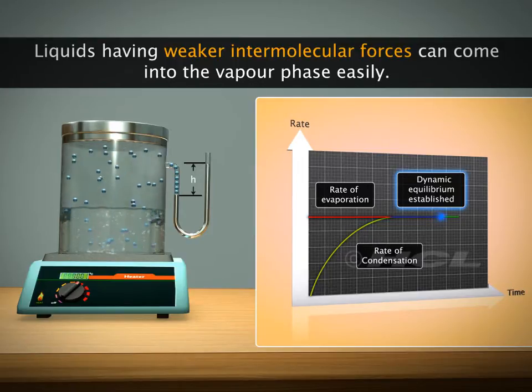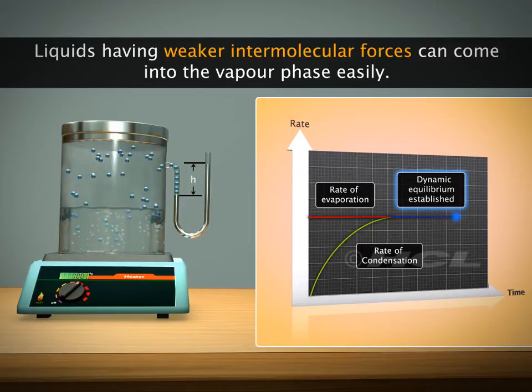Vapor pressure depends upon the nature of the liquid. Liquids having weaker intermolecular forces can come into the vapor phase easily.